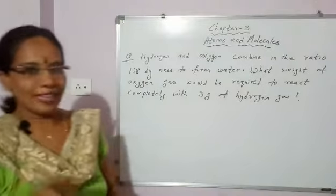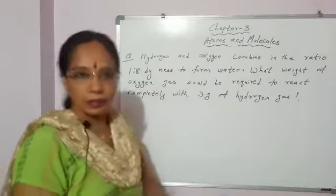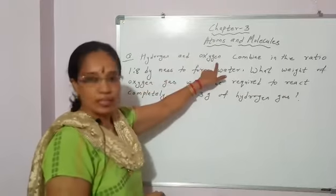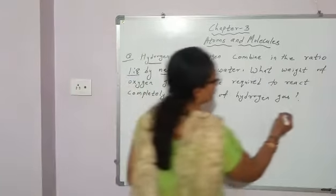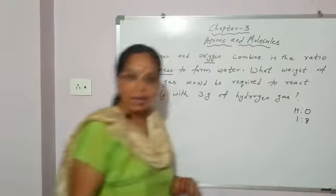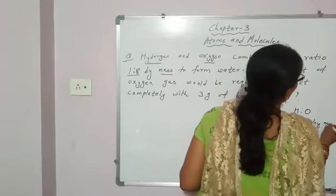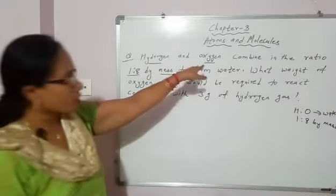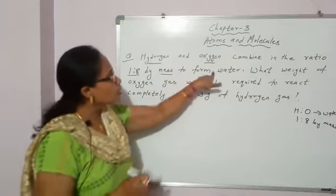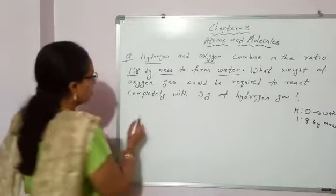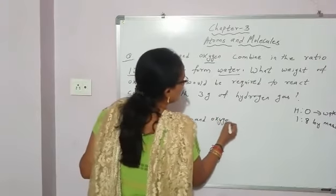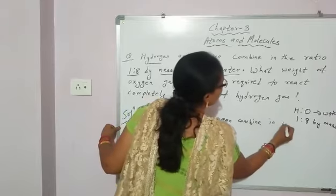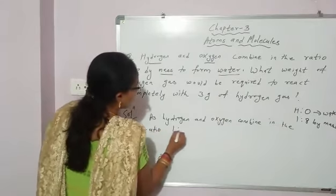Yes students, now based on the law of constant proportion, this is one of the numericals. Hydrogen and oxygen combine in the ratio 1:8 by mass to form water.